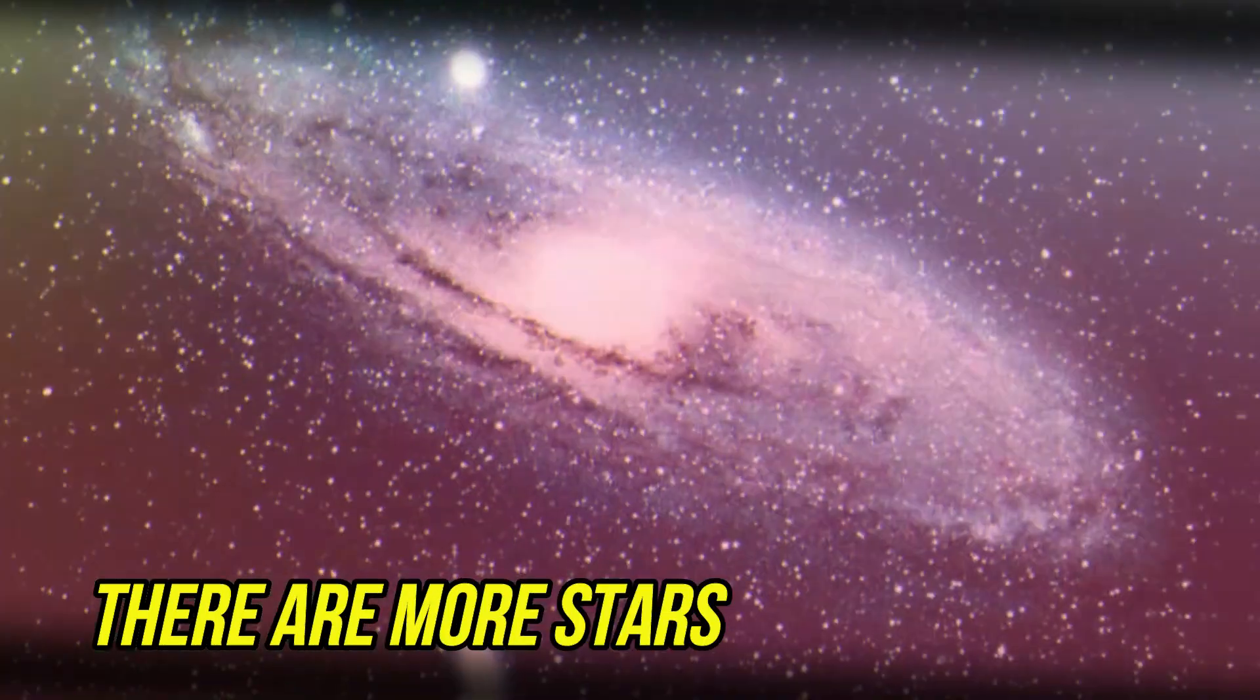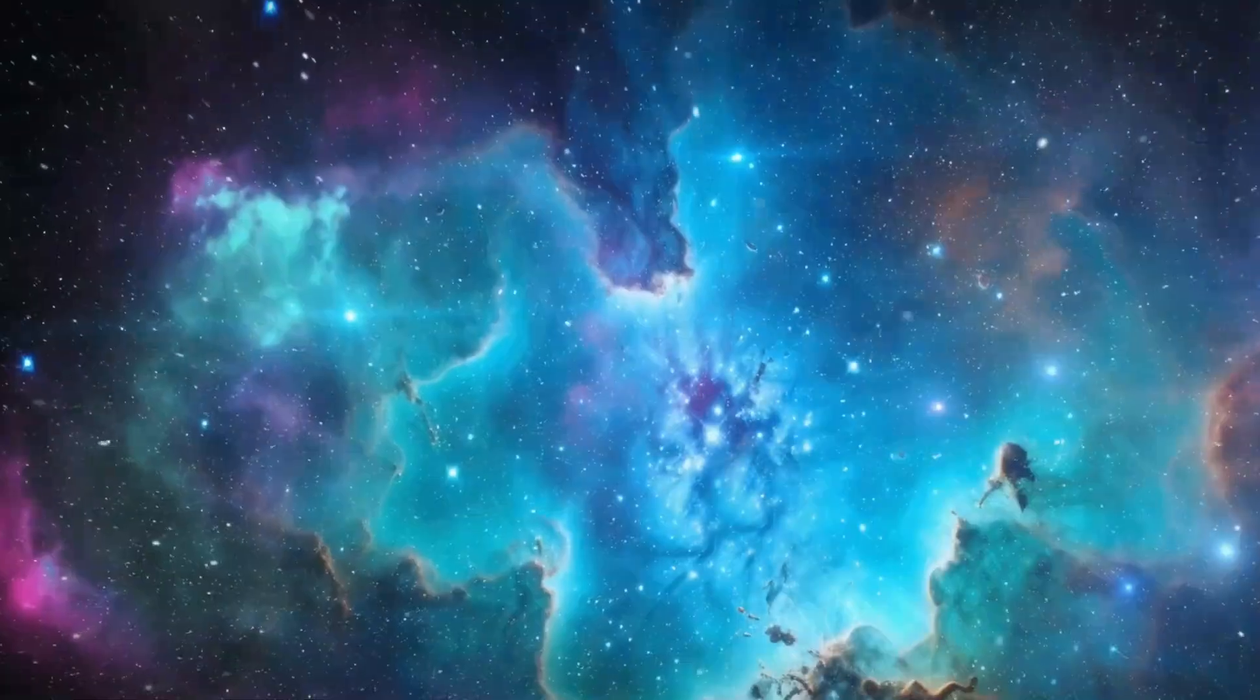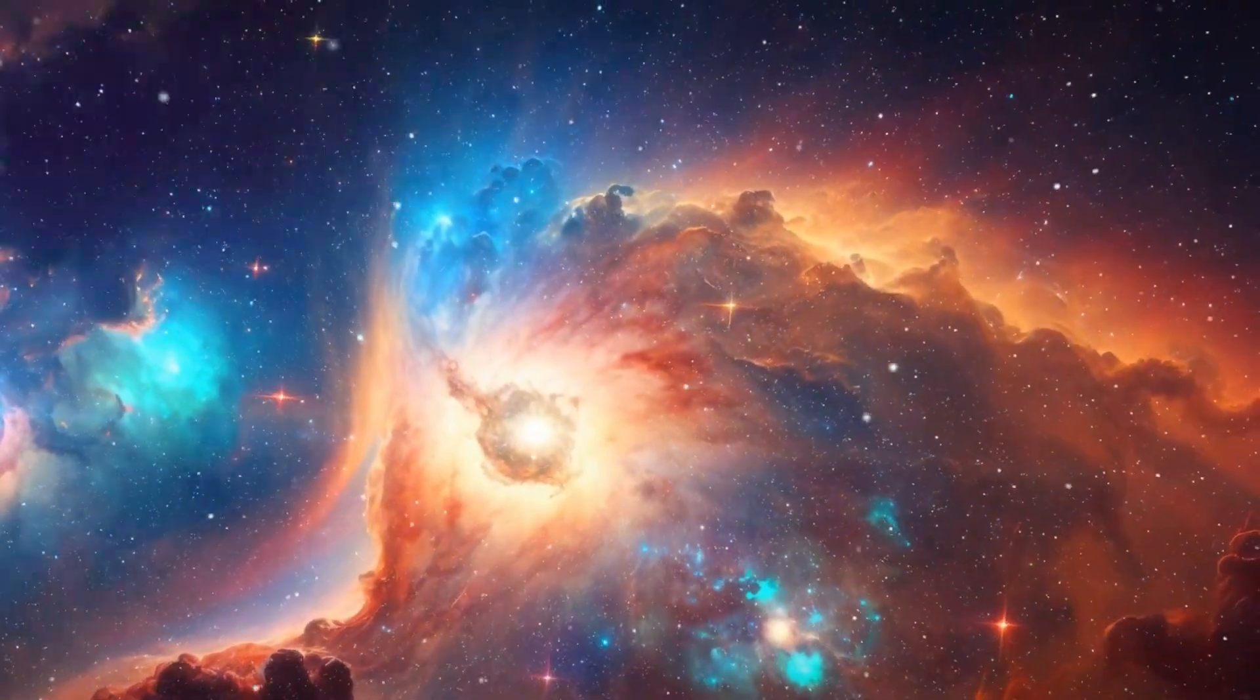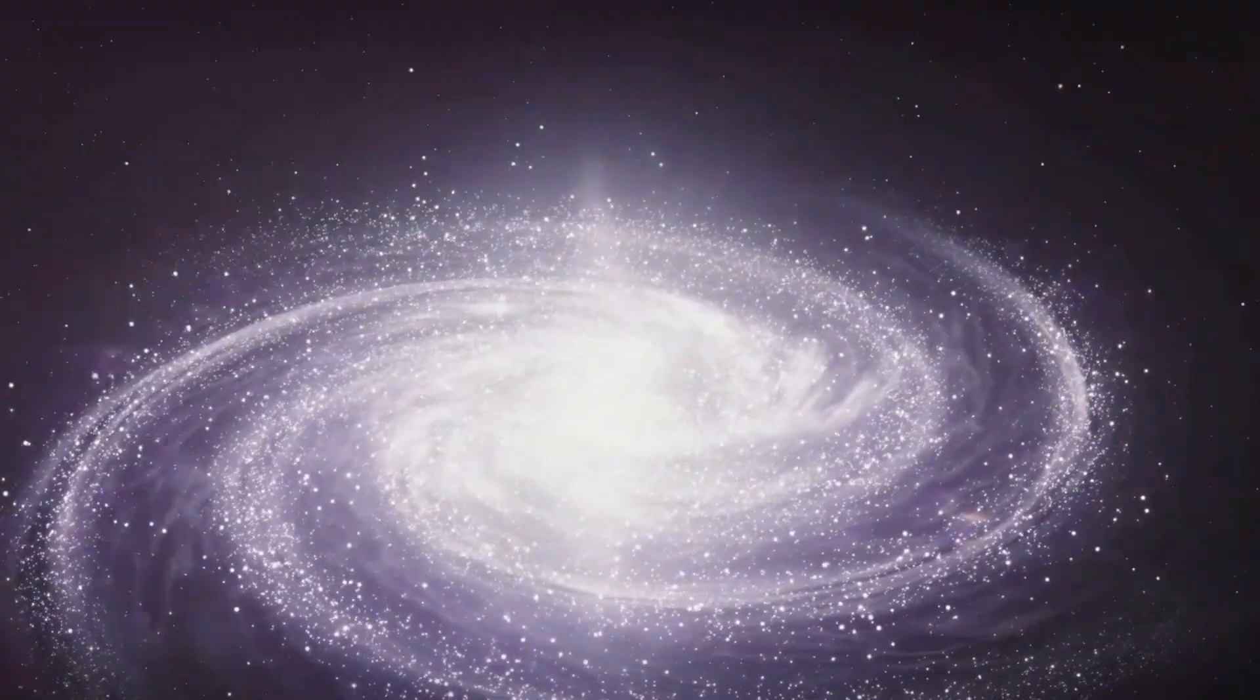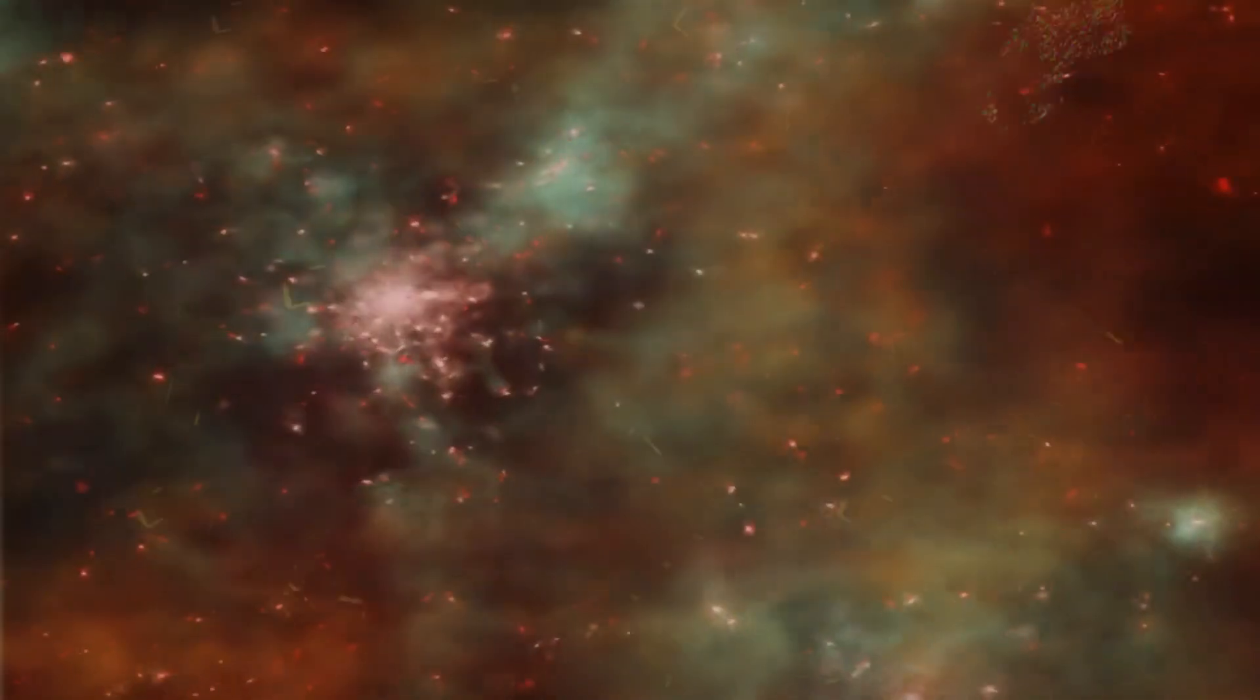Number 8. There are more stars in the universe than grains of sand on Earth. Think about this: there are more stars in the observable universe than there are grains of sand on all the beaches and deserts on Earth combined. With 100 to 200 billion galaxies, each containing billions of stars, the total number of stars is mind-boggling.